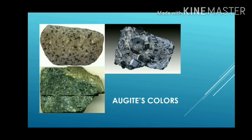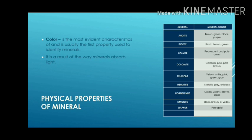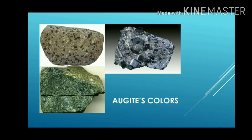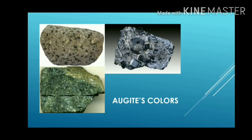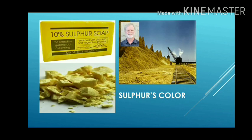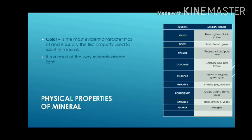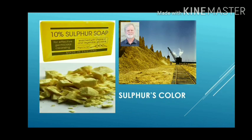Augite's colors are brown, green, black, and purple as shown in the image. Sulfur is usually pale gold in color. Sulfur is a multivalent non-metal — abundant, tasteless, and odorless — and in its native form it is a yellow crystalline solid.